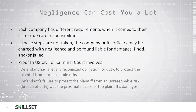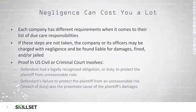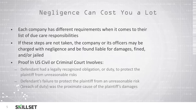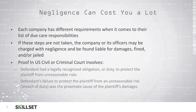In order to prove negligence in a United States civil court or criminal court, it must be proven that the defendant had an obligation or a duty to protect the plaintiff from an unreasonable risk, that the defendant's failure to protect the plaintiff from that unreasonable risk was a breach of duty, and that this was the proximate cause of the plaintiff's damages.